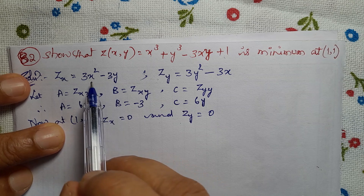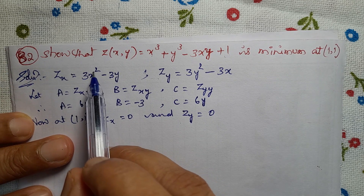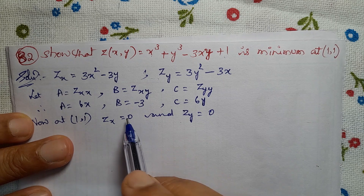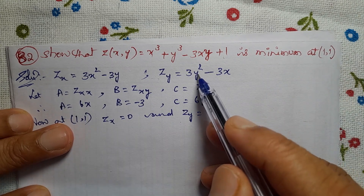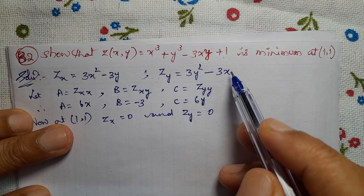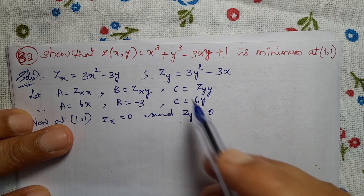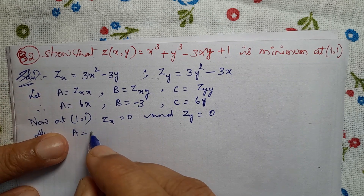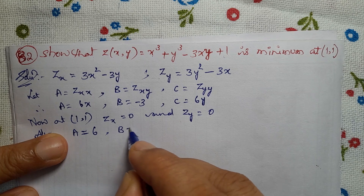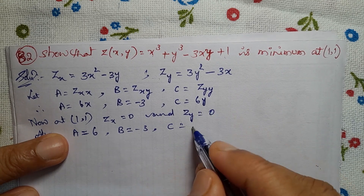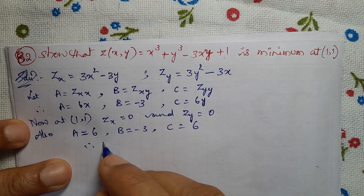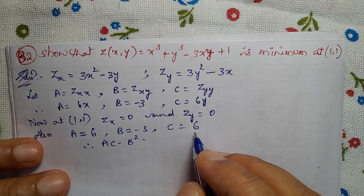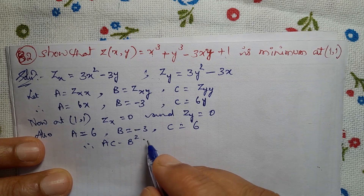Substituting the point (1, 1): for ZX, 3(1)² - 3(1) = 3 - 3 = 0, so ZX = 0. For ZY, 3(1)² - 3(1) = 3 - 3 = 0, so ZY = 0. Also, A = 6(1) = 6, B = -3, and C = 6(1) = 6.